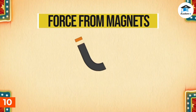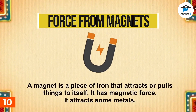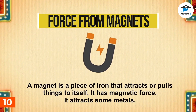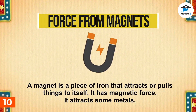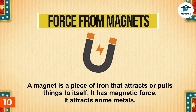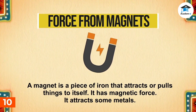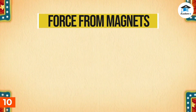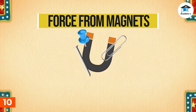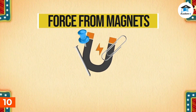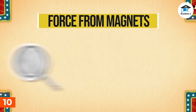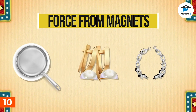Force from magnets. A magnet is a piece of iron that attracts or pulls things to itself — it has magnetic force and attracts some metals. Materials that are made of iron or steel are attracted to magnets and are called magnetic materials. Examples of these are nails, pins, and paper clips. However, not all metals are attracted to magnets. Examples of such materials are aluminum pans, gold earrings, and silver bracelets.